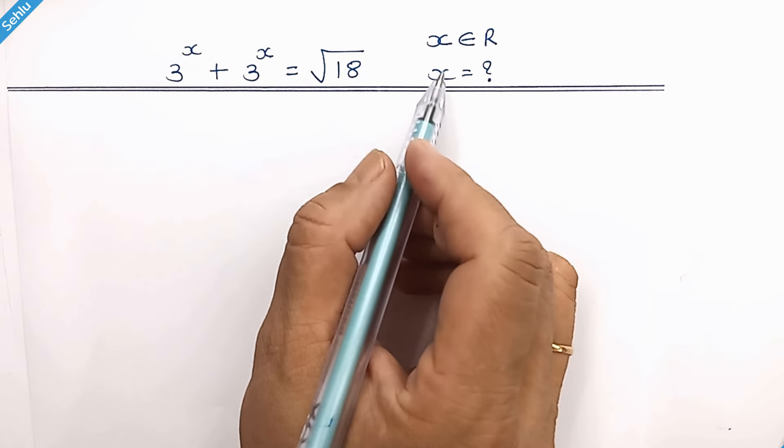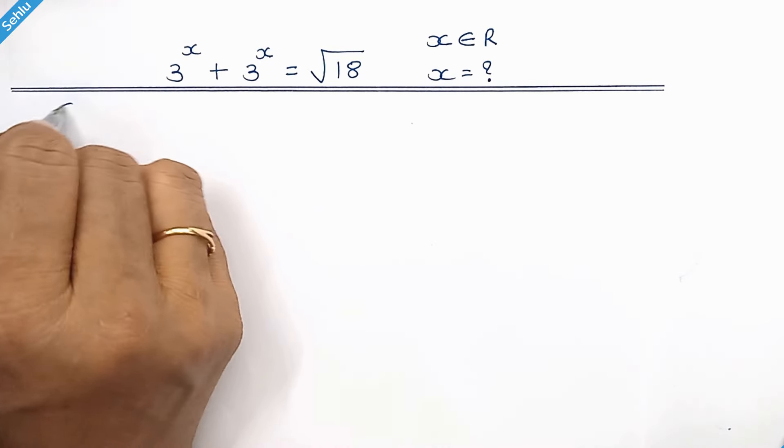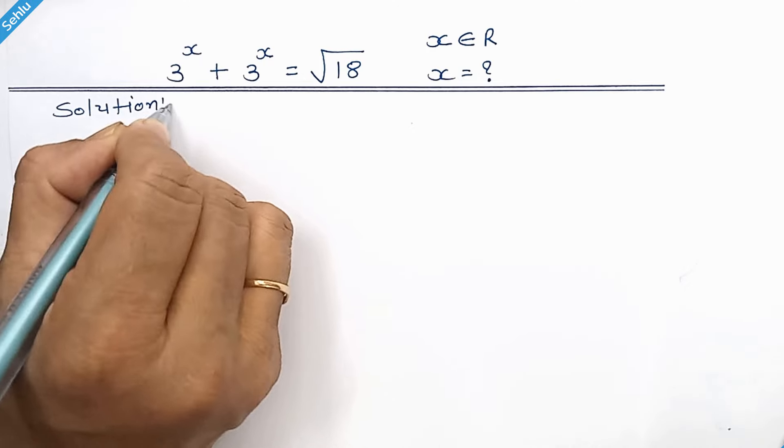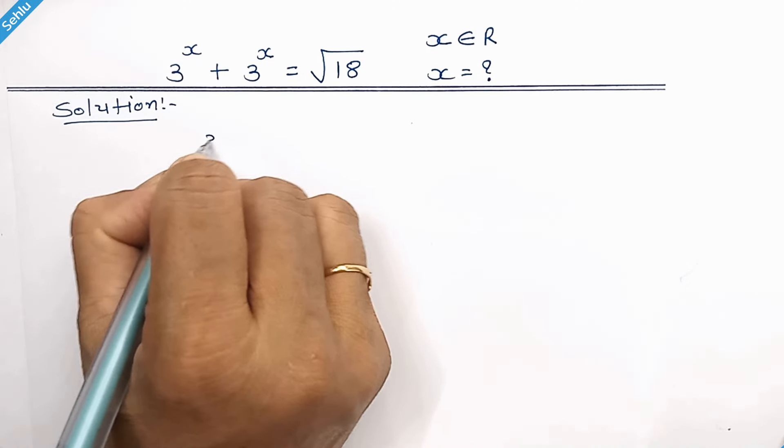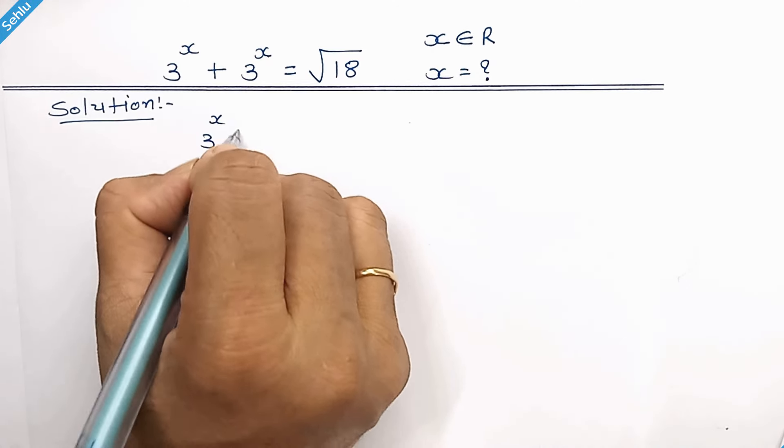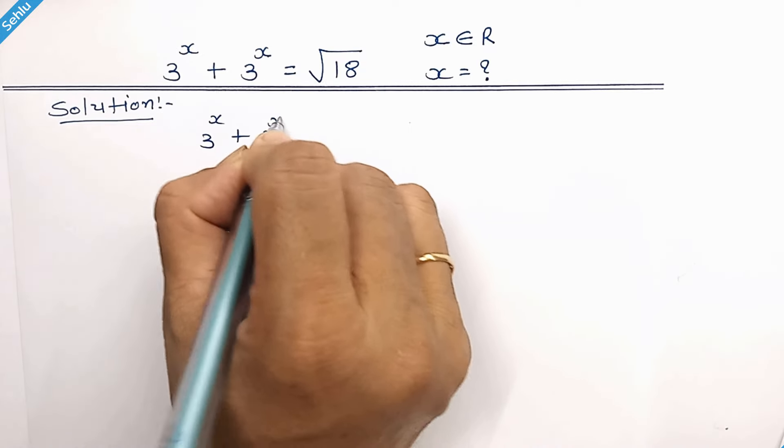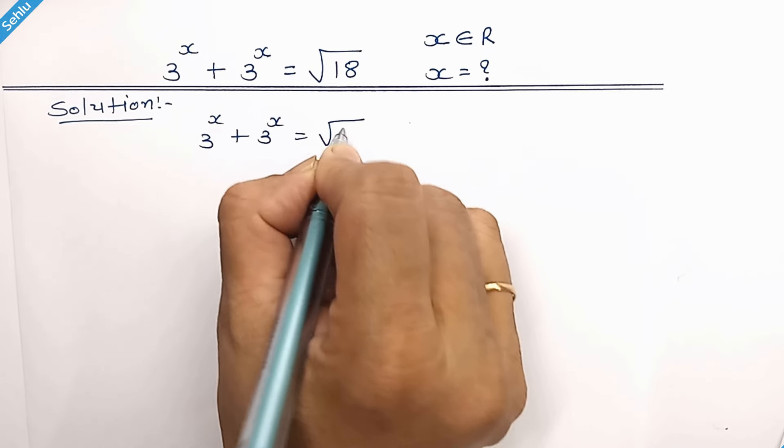Hello friends, let's find out the real value of x. The question is: 3 to the power x plus 3 to the power x equals square root of 18.